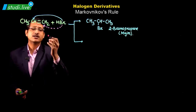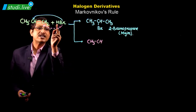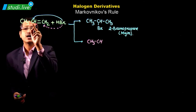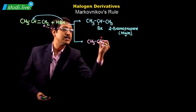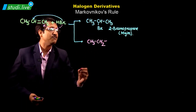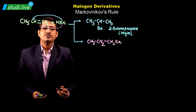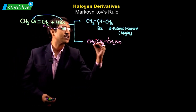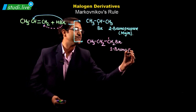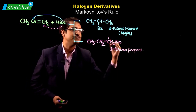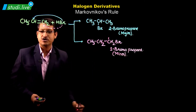For the second possibility: we have CH3, CH, and the H left out combines with CH, giving CH2. So the product is CH3–CH2–CH2Br. The first carbon carries the Br, so this compound is called 1-bromopropane. This is the minor product — 20% concentration.